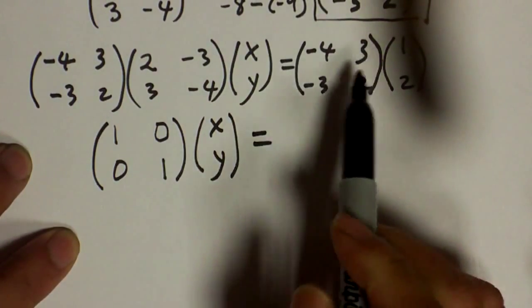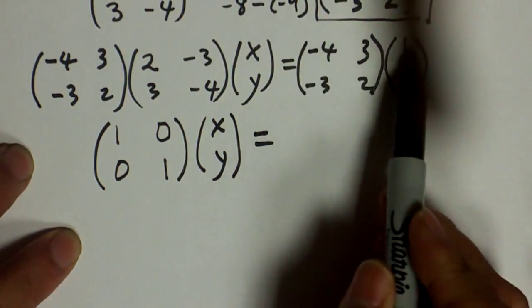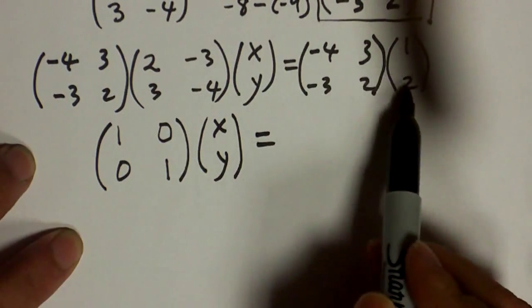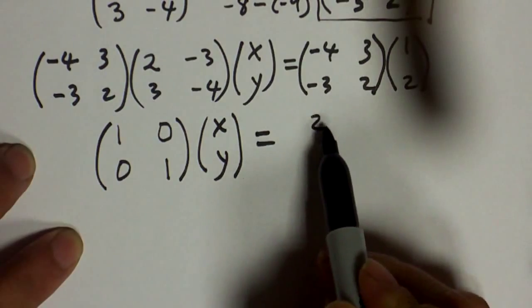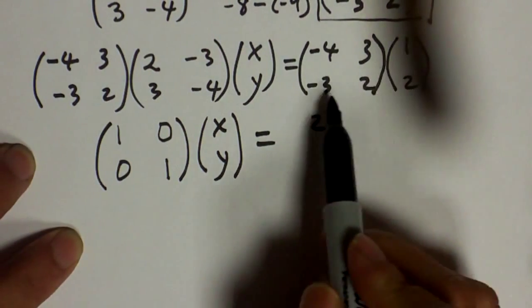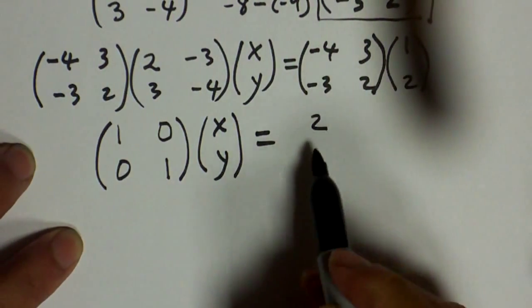Let's see what we get on the right side. Across down: negative 4 times 1, 3 times 2 is 6, 6 plus negative 4 is 2. Across down: negative 3 times 1, 2 times 2, that's 1. So we get [2; 1].